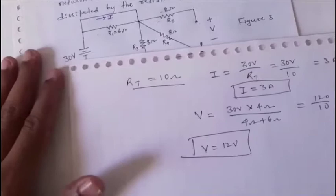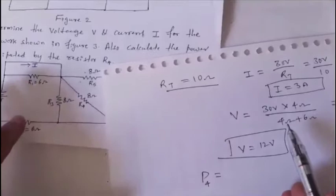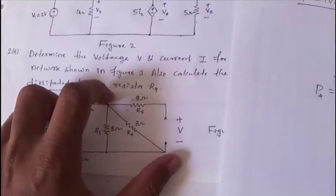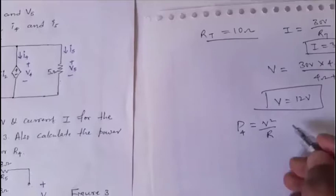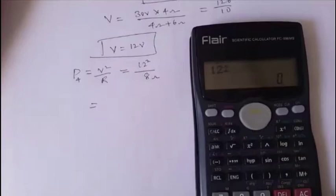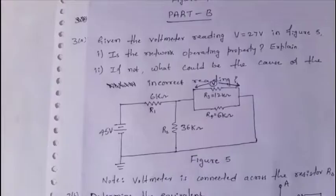Power dissipated by r4: since the 12 V appears across the parallel combination including r4 = 8 Ω, power = v² / r = 12² / 8 = 144 / 8 = 18 W.